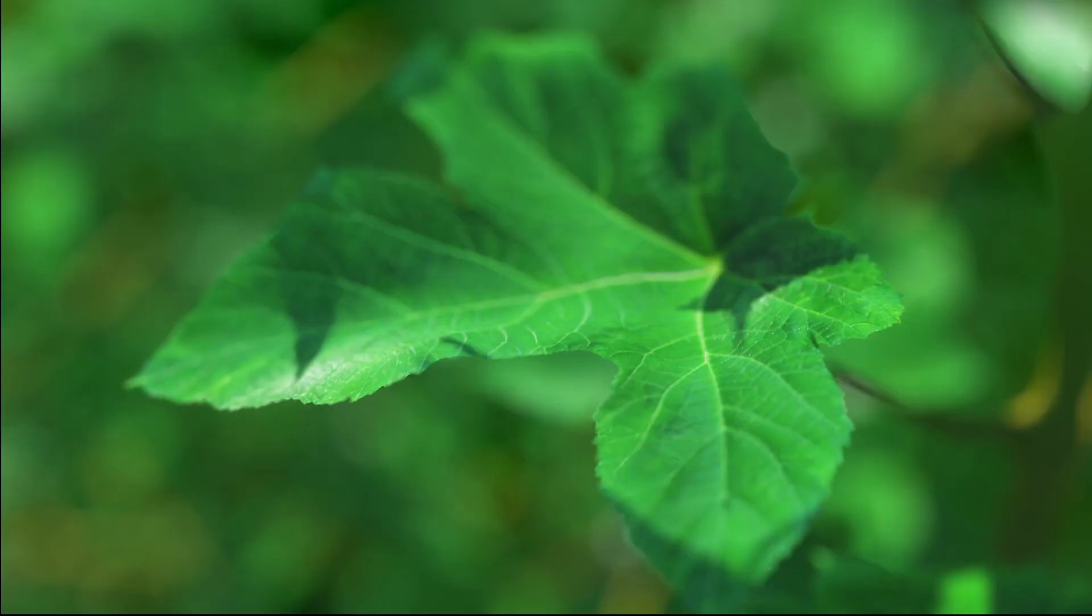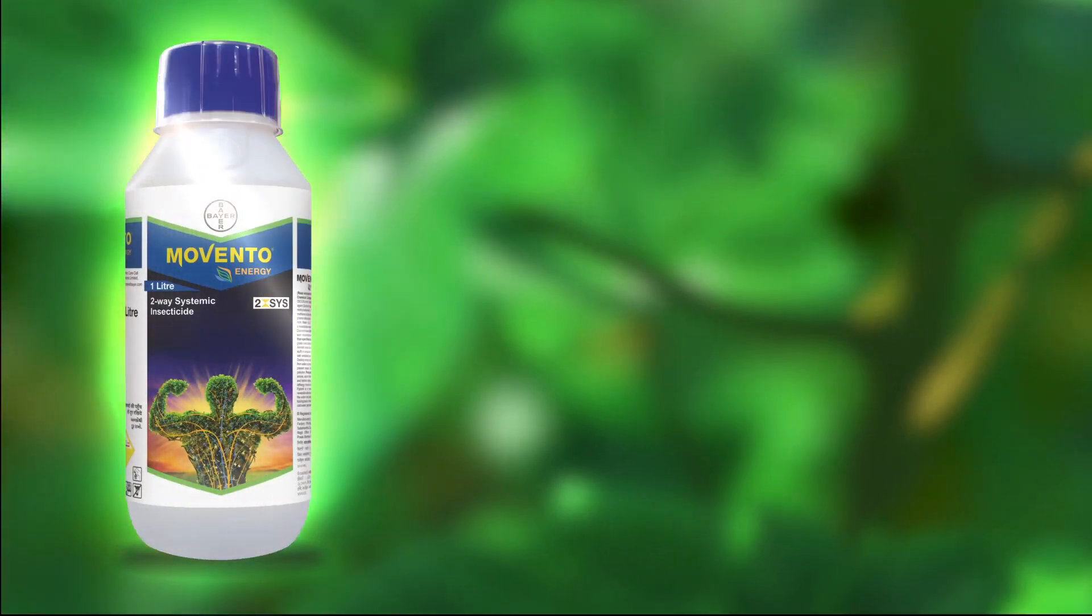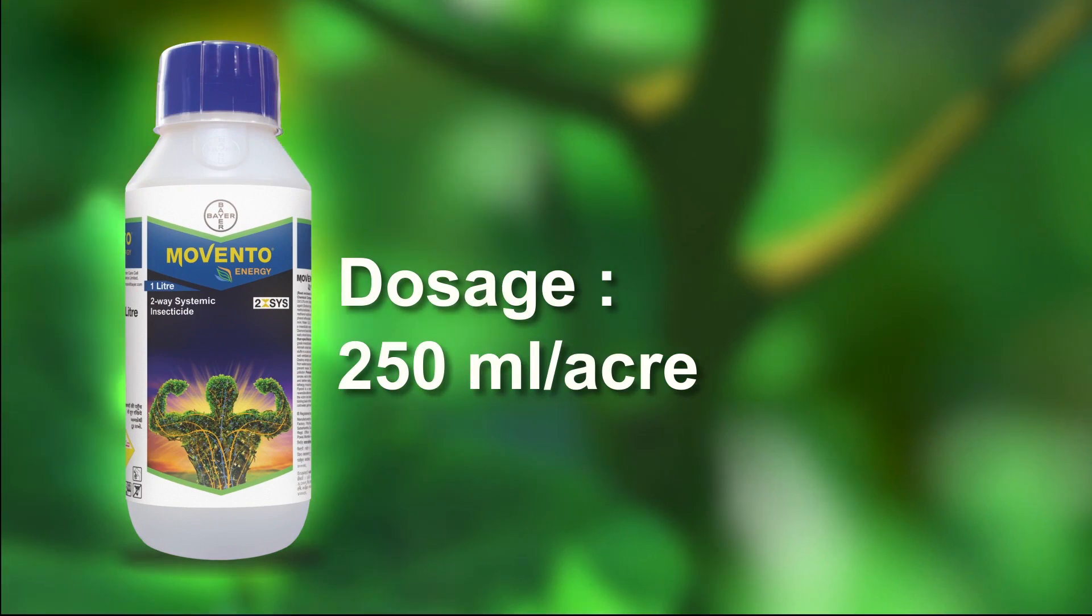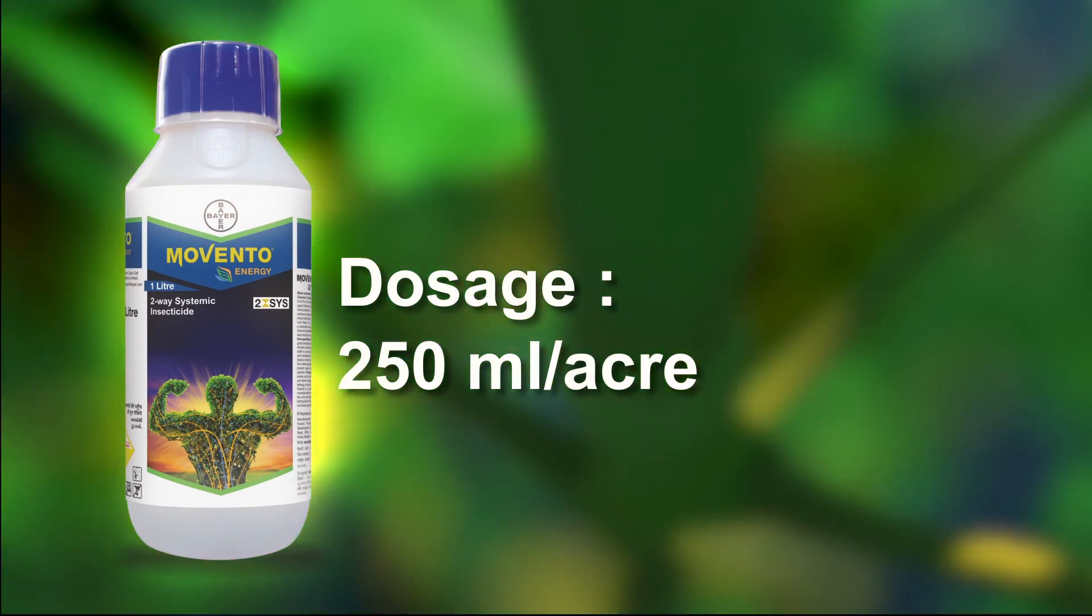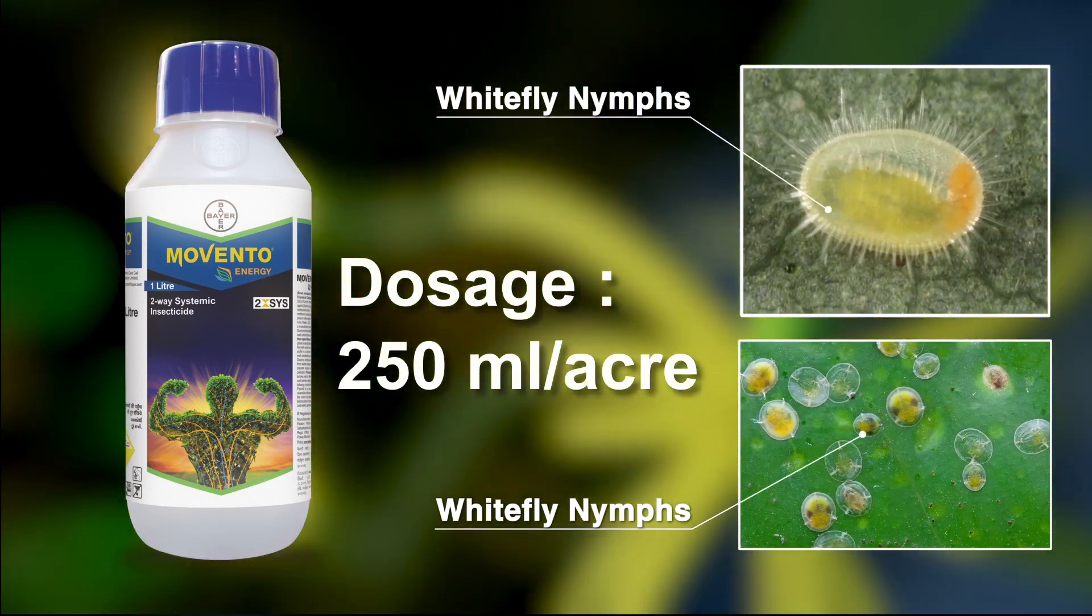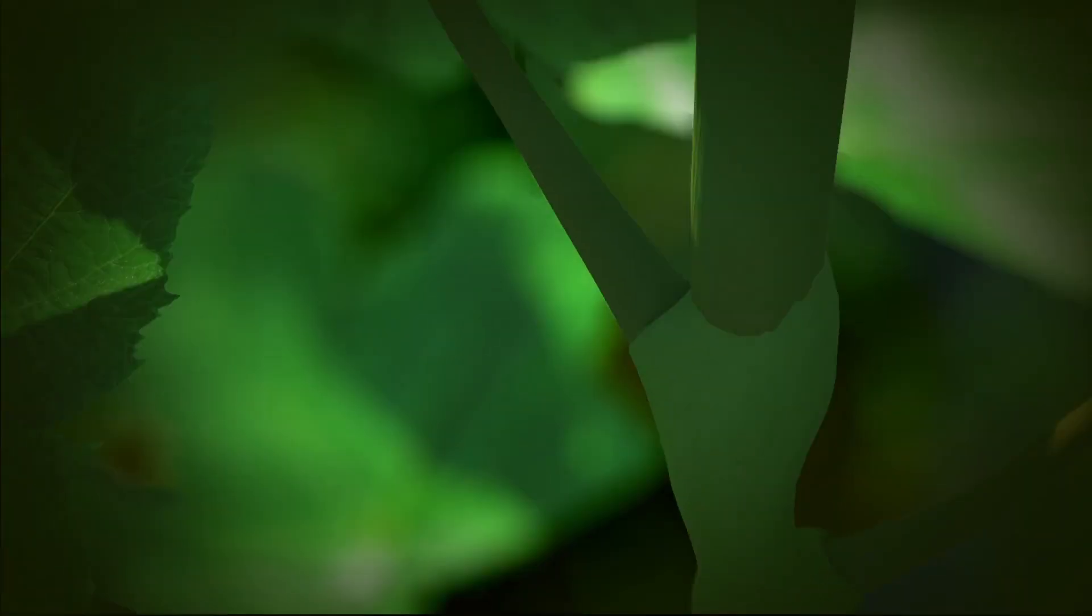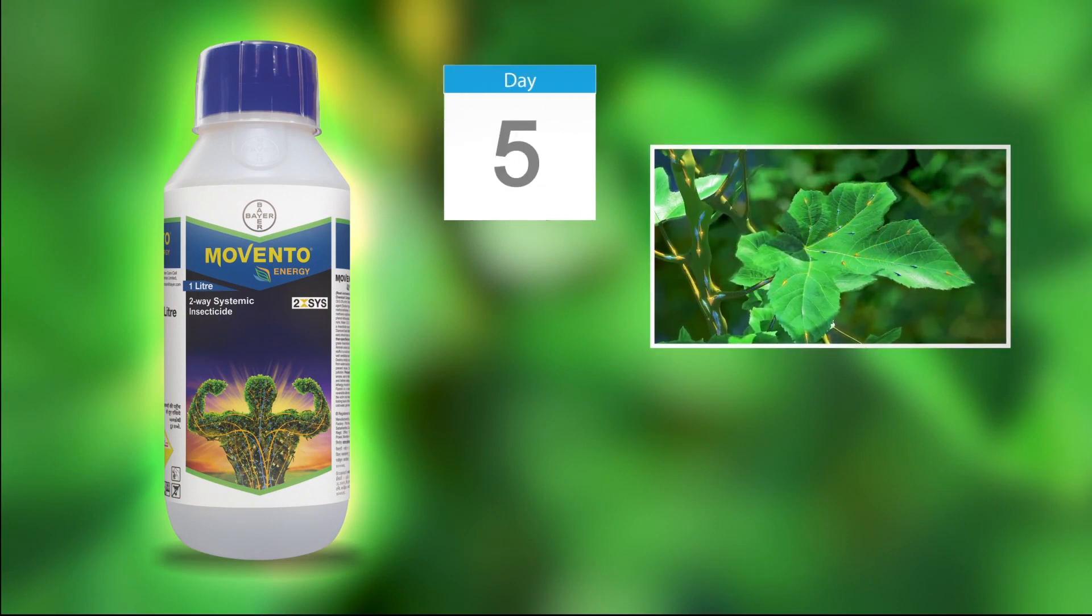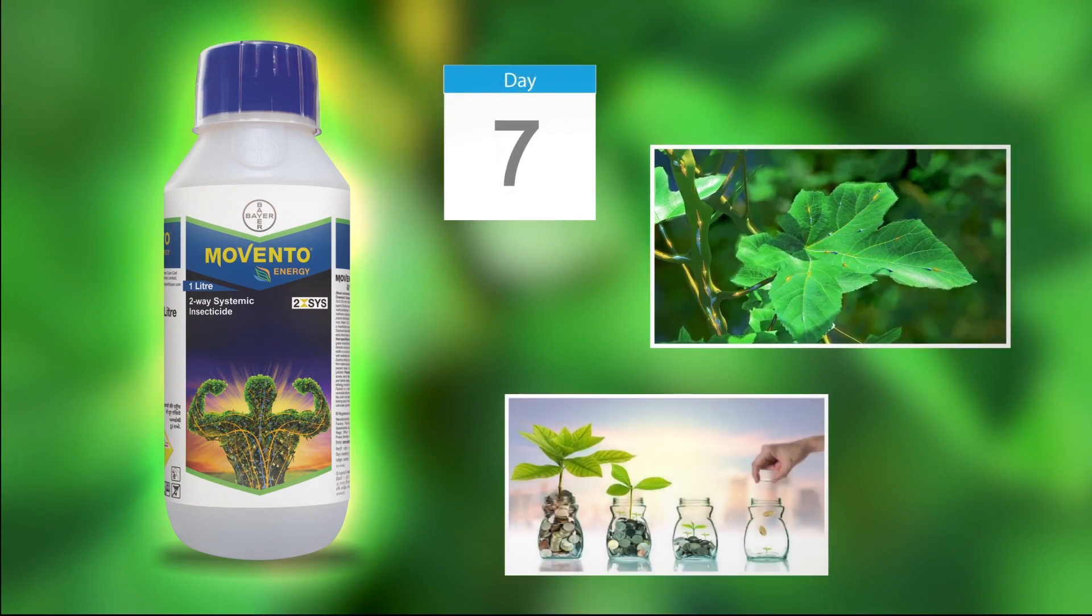Movento Energy, when used at 250 ml per acre, strengthens the plant internally which gives it complete safety from visible as well as hidden insects. So how does this translate into benefits for you? Movento Energy once sprayed provides long-term protection to the crop. This not only reduces repeated exposure to chemicals but also brings down the per day cost as well.